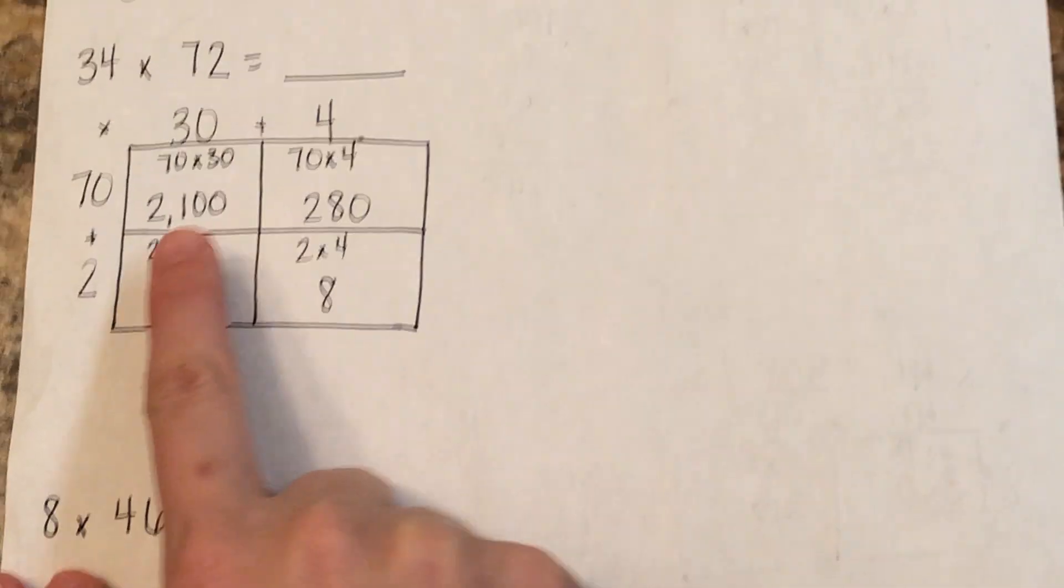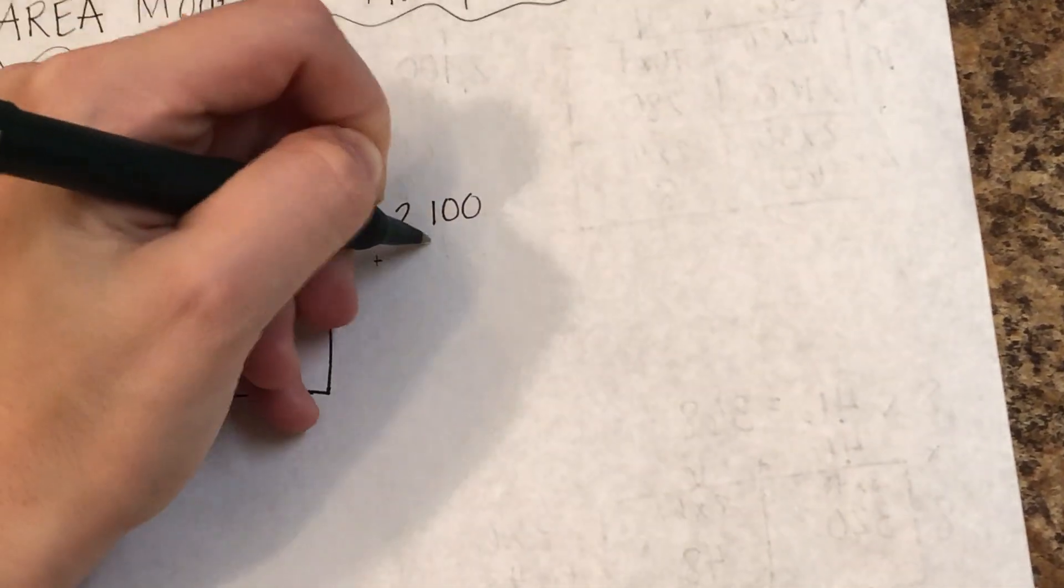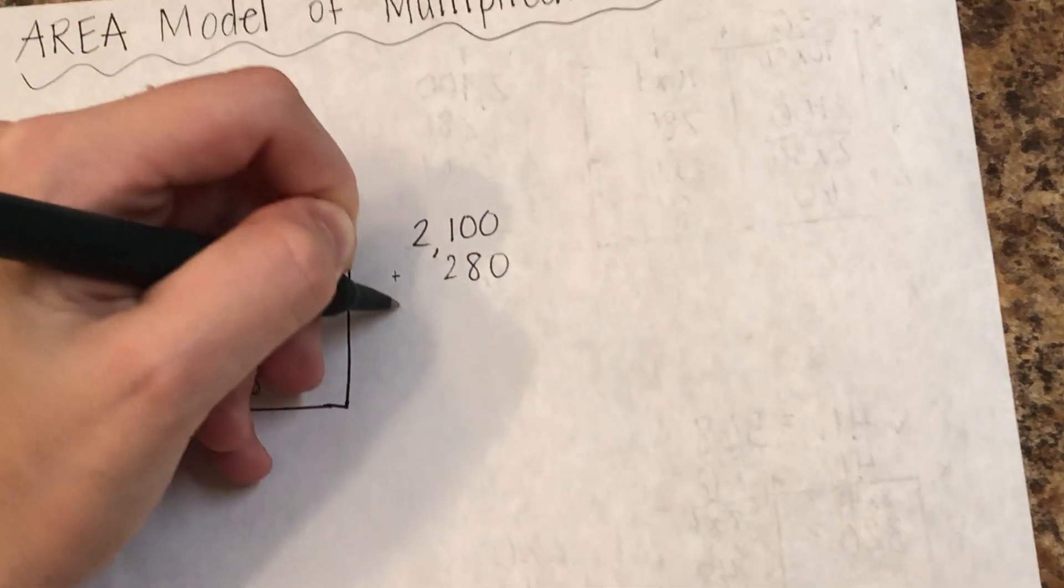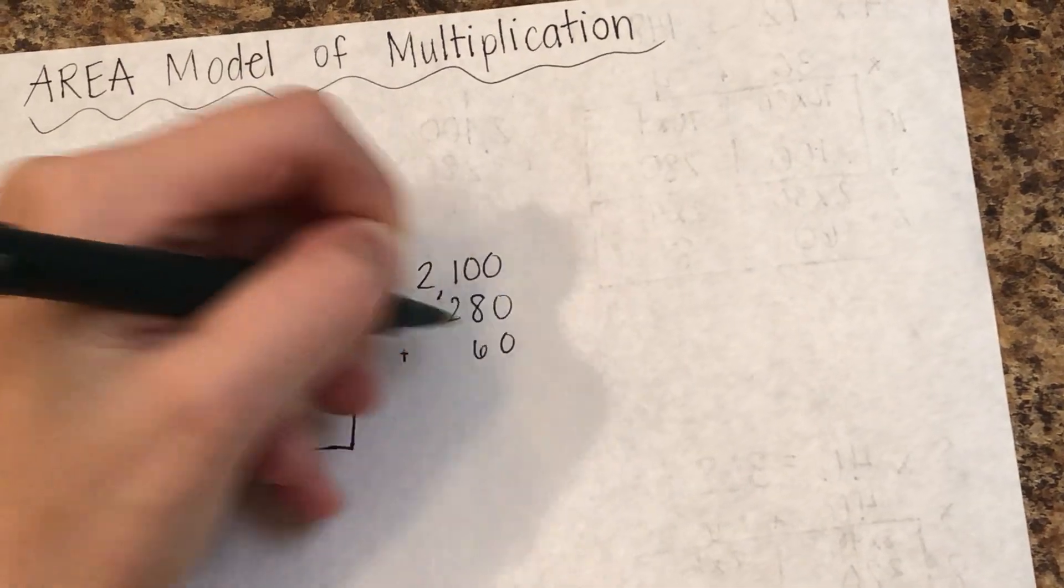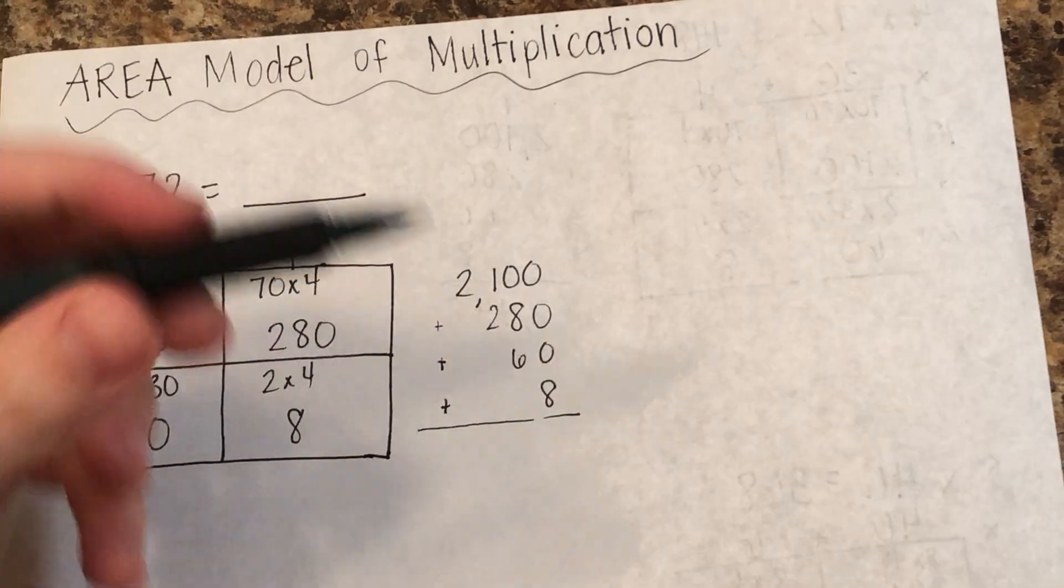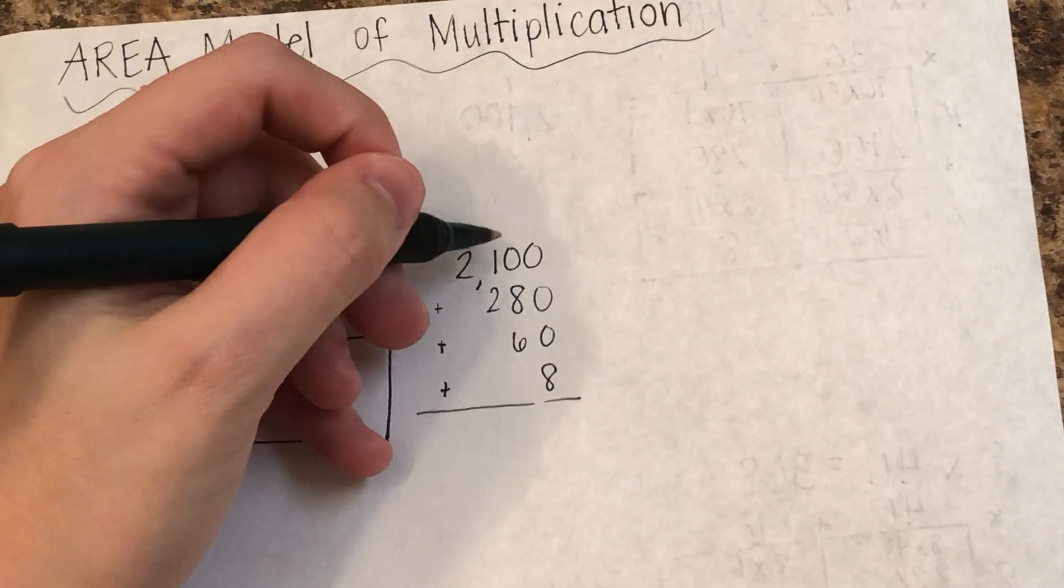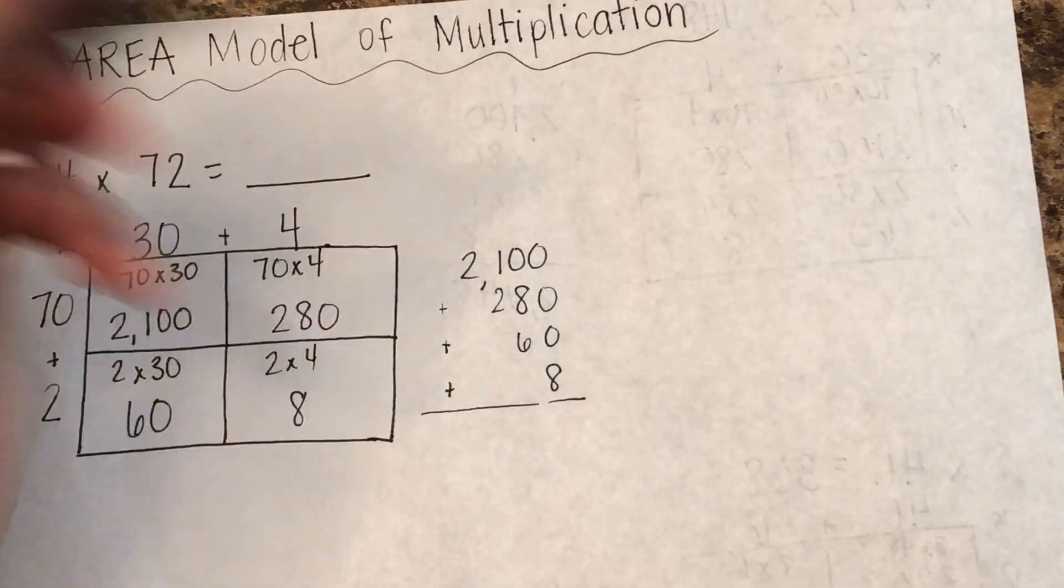Now, all I have to do is add up these four numbers. So I have 2,100 plus 280 plus 60 plus 8. You want to make sure that you line your numbers up correctly, so that all the place values are in the right place. So all your 1s are together, all your 10s are together, hundreds and thousands.